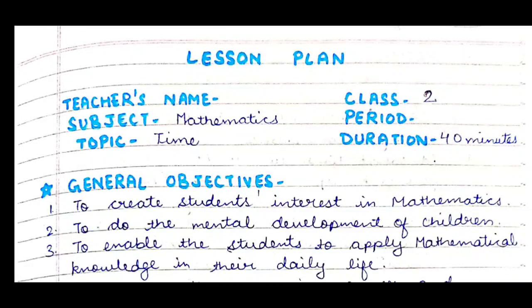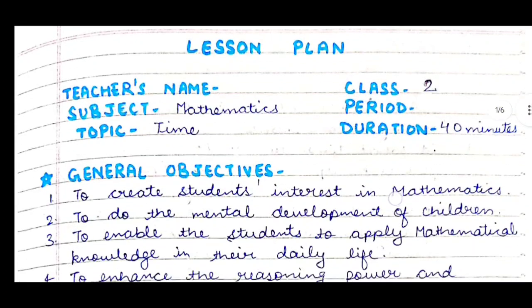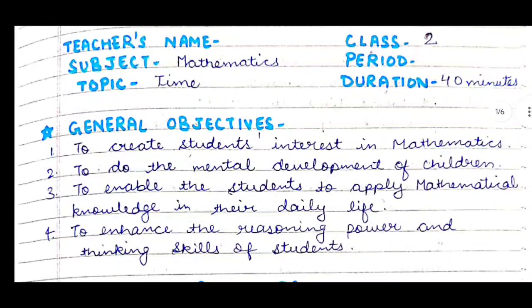Our period is whatever you have to write. After that, our duration will come — we will be studying for about 40 minutes. After that, we will write general objectives. The first objective is to create students' interest in mathematics.